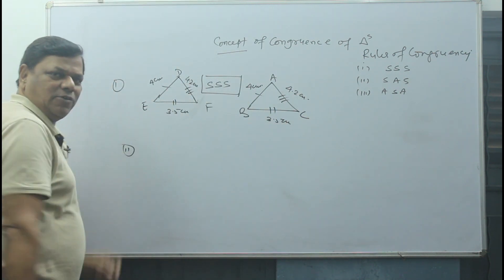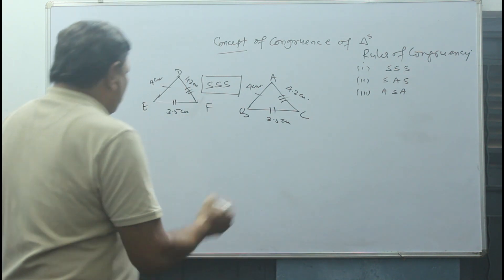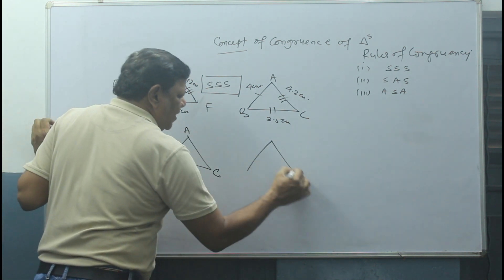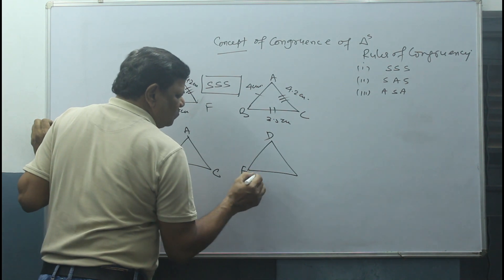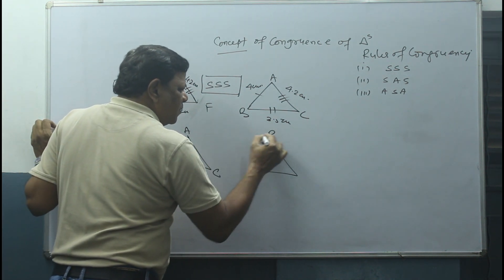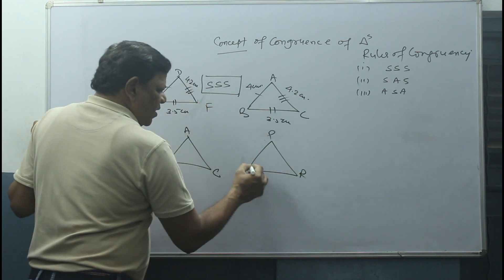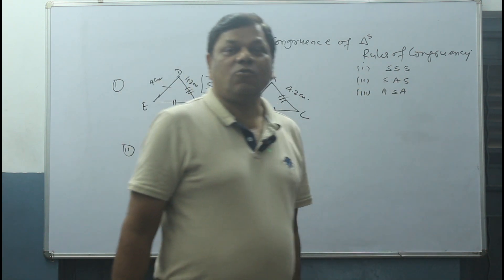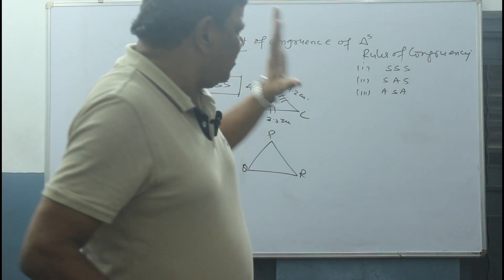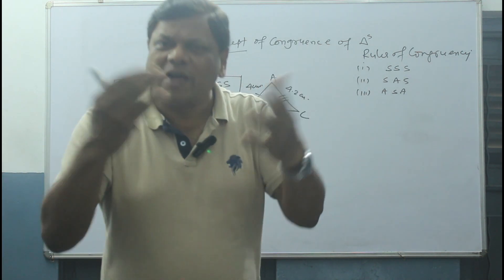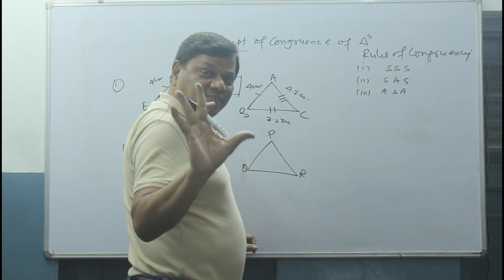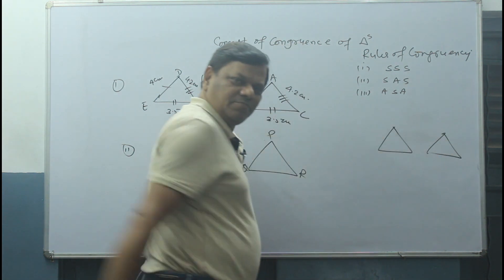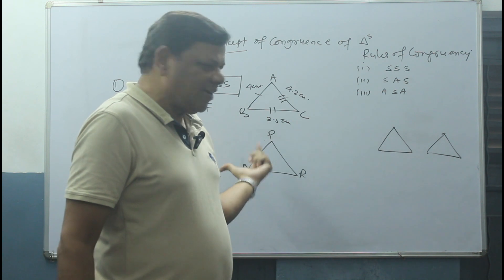Now, rule number 2 I am explaining. Again I will draw two triangles — here triangle ABC, and here another triangle PQR. Before explaining, something more I want to tell you — try to understand this very nicely. In one triangle there are three sides and three angles, and in another triangle there are also three sides and three angles.